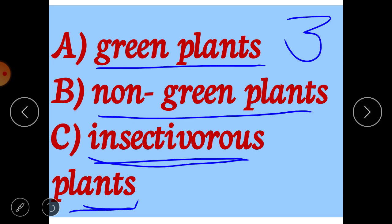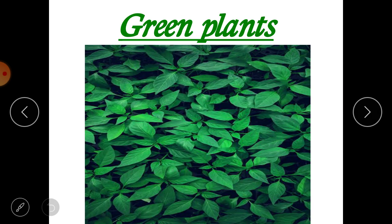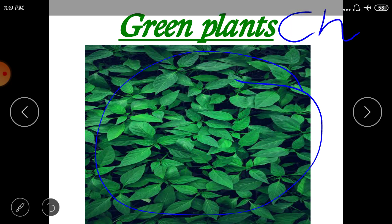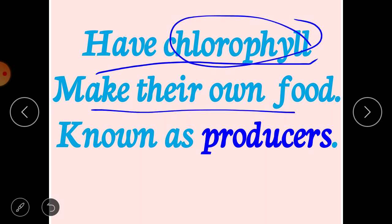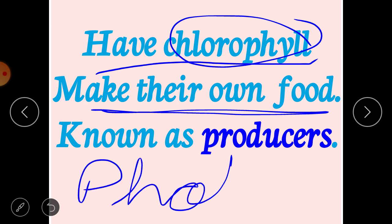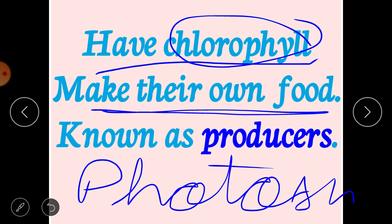Firstly, we are going to start with green plants. Green plants are green in color because they have a green pigment called chlorophyll present in the leaves, which helps plants to prepare their food. These plants have chlorophyll which makes them appear green in color, and because of chlorophyll they make their own food by the process of photosynthesis.